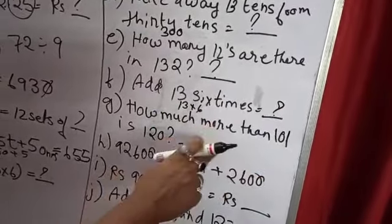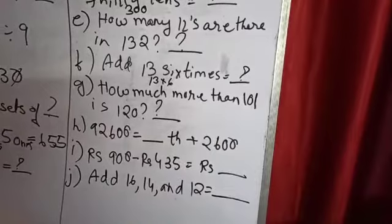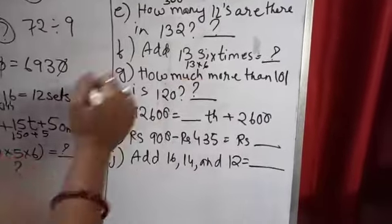How much more than 101 is 120? You have to do the subtraction of it, and see how much it is coming. We know that 120 and 100 means only 20 difference. But 1 is given over here, so 1 more you have to make it less. So it becomes 19 over here.